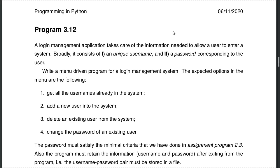In the last program of assignment 3, you need to make a login management system that will take care of the information needed to allow a user to enter a particular system. Broadly, a user login management system consists of two parts: a unique username and the corresponding password. Given this username-password pair, one can enter into that system — similar to login systems like WeLearn portal, Gmail, or other Google applications. You may consider the program from the point of view of the system administrator who handles storing both the username and password for a given user.